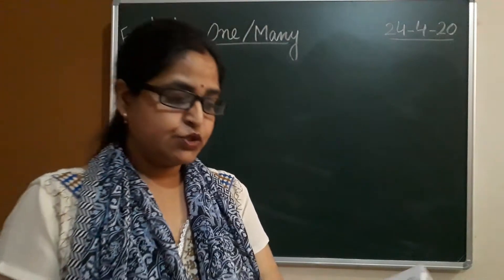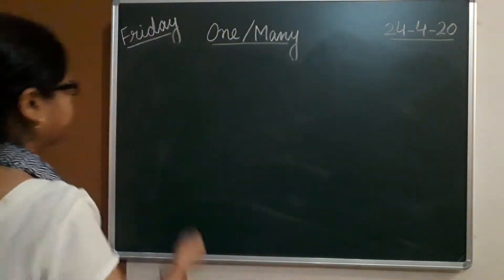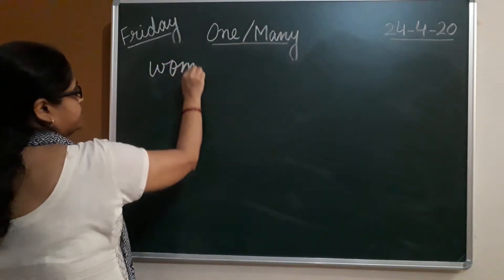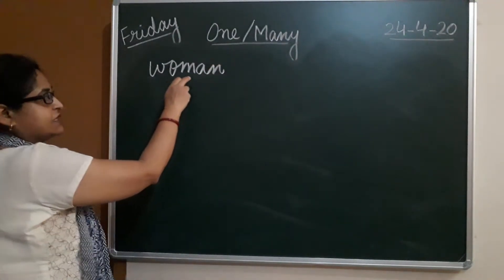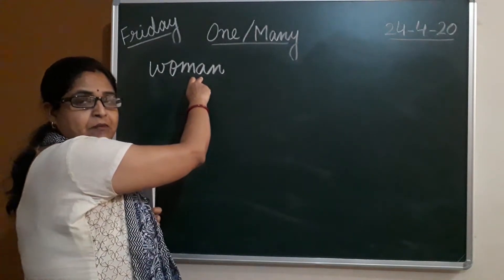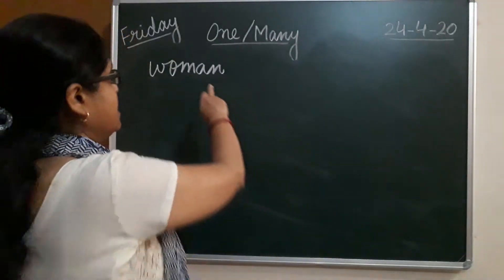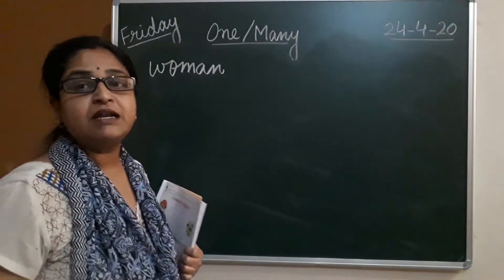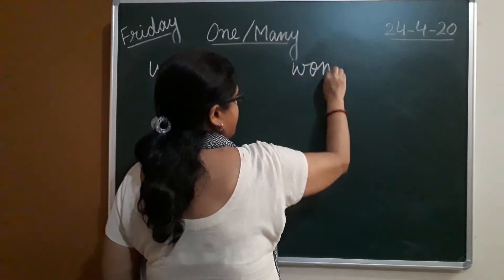In this table, you will see that there are some words like 'woman'. Woman is a singular word. When you make the word 'woman' plural, the 'a' in 'man' changes and it becomes 'women'. We just change that letter and it becomes women.